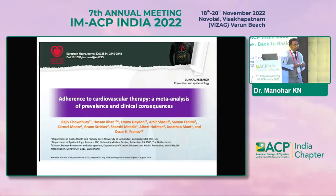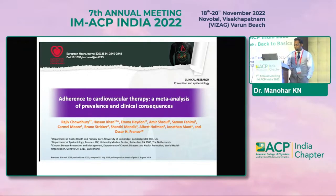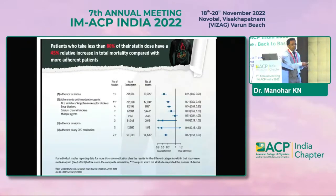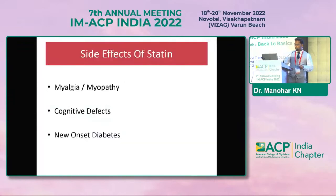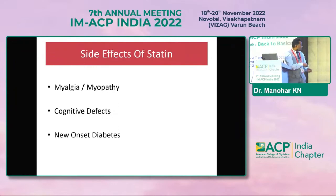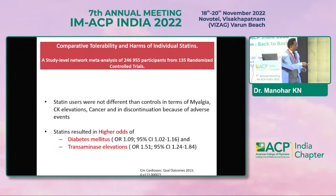A key question: how do you know statin therapy was really needed? A meta-analysis on adherence to cardiovascular therapy showed that patients taking more than 80 percent of their statin doses had a 45 percent relative reduction in total mortality. When patients missed statin doses when indicated, their mortality went up significantly — underscoring the importance of statin therapy. Known side effects include myalgia, myopathy, occasional cognitive effects, and new-onset diabetes, which is always debated. Statins result in higher odds of diabetes mellitus and transaminase elevation.